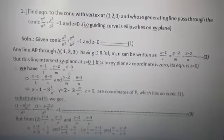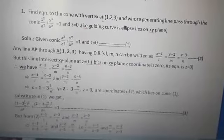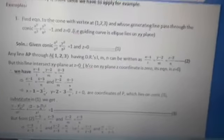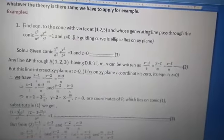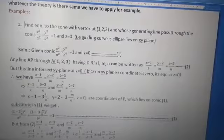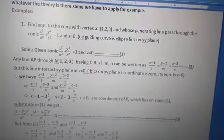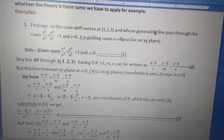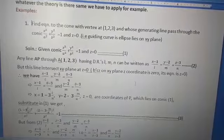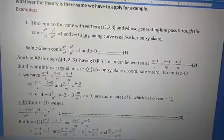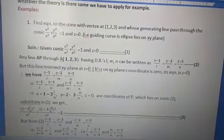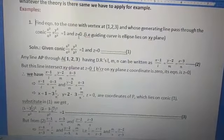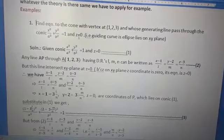Find the equation of the cone with vertex (1, 2, 3) and whose generating line passes through the conic x²/a² + y²/b² = 1 and z = 0. So this second curve is the ellipse lying on the xy-plane, and that itself is the guiding curve.